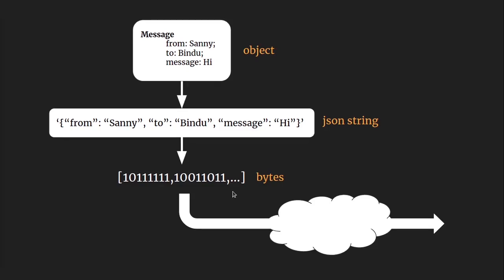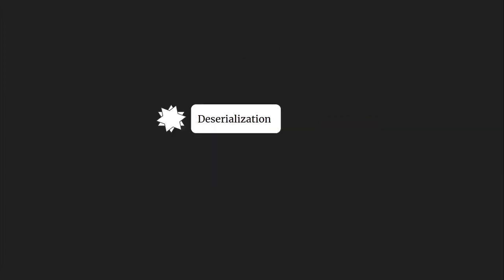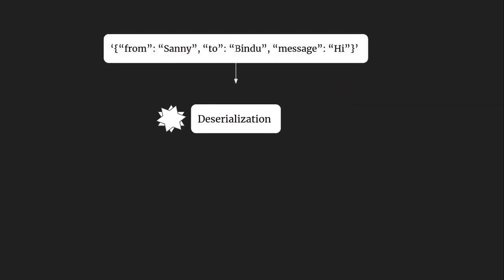During the process of serialization, the state of the object gets stored. The byte stream created after serialization is platform independent, so the object serialized on one platform can be deserialized on a different platform. The serialized data received at the other end is then deserialized to convert it back into its original object.